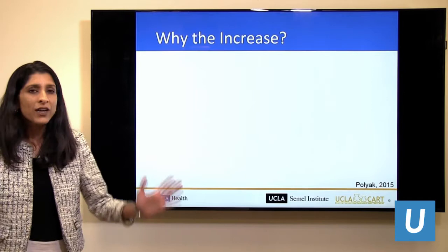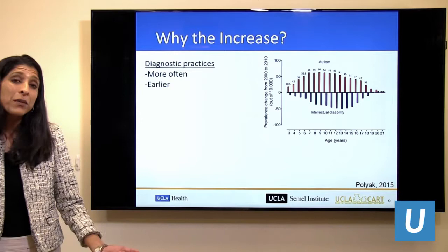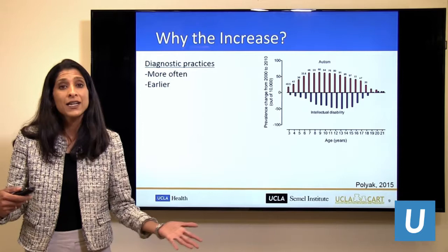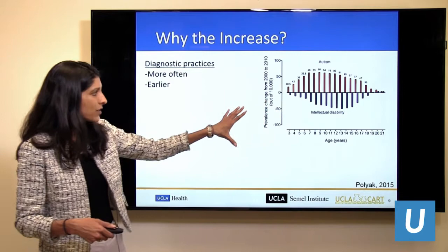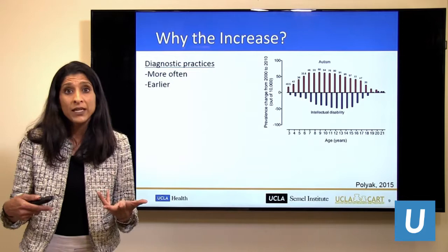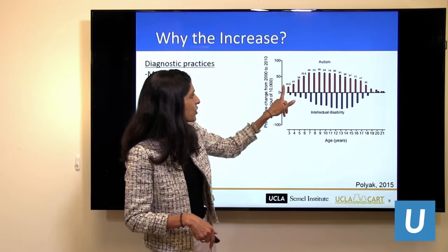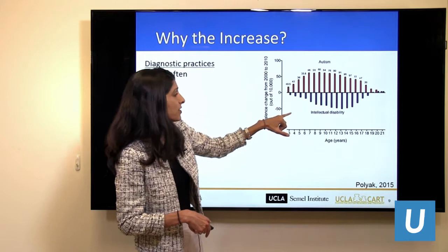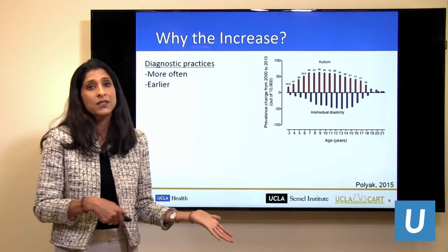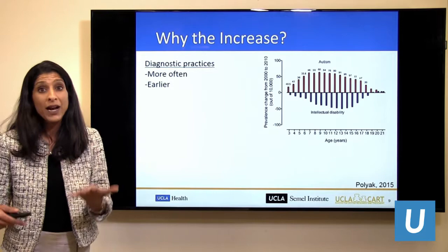The first question I always get is: why the increase? This is where myth number one starts to get busted. The real reason is very pragmatic — we're diagnosing it more. We're aware of autism and look for signs earlier in development. This graph shows school records from a large international registry study of IEP primary diagnoses, showing that as rates of intellectual disability diagnoses go down over time, rates of autism go up — indicating a shift in diagnostic practice, not necessarily a true increase in prevalence.